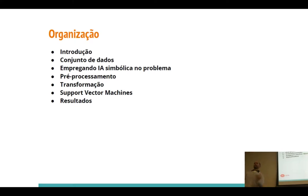Vamos organizar um pouquinho. Eu não vou conseguir aprofundar tanto quanto gostaria, porque há uma correlação entre o tempo de apresentação e a profundidade. Vou começar falando uma breve introdução do conjunto de dados que a gente usou nessa técnica, e vou falar também como é que a gente empregou a IA simbólica para resolver o problema. Porque a análise de similaridades, quando você usa só o método probabilístico — como os próprios word embeddings — dá para usar tanto na abordagem probabilística quanto com algoritmos de aprendizagem de máquina.